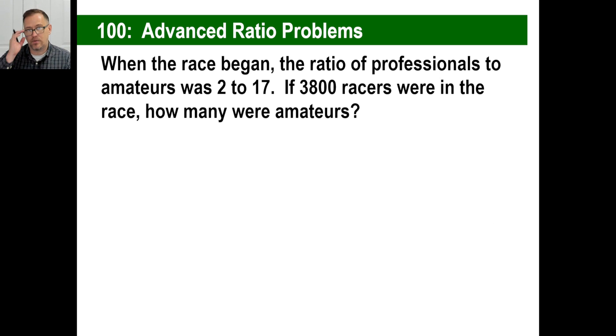Another one. When the race began, the ratio of pros to amateurs was 2 to 17. 3,800 racers were in the race. That's the total. How many were amateurs? Well, let's figure out our ratios, right? You know what? Pause it right now. You go ahead right now and figure it out. Write me three ratios. Pros to amateurs. Pros to the total. And amateurs to the total. Pause it and go ahead and write those three.